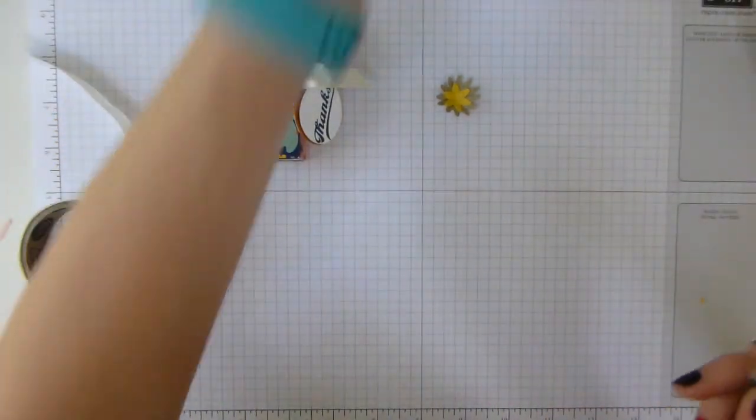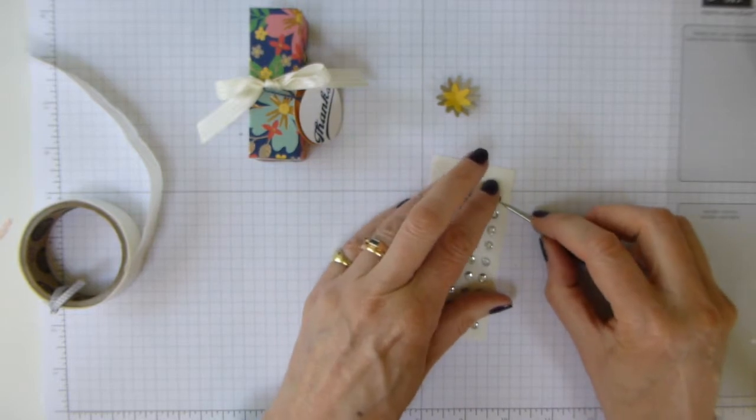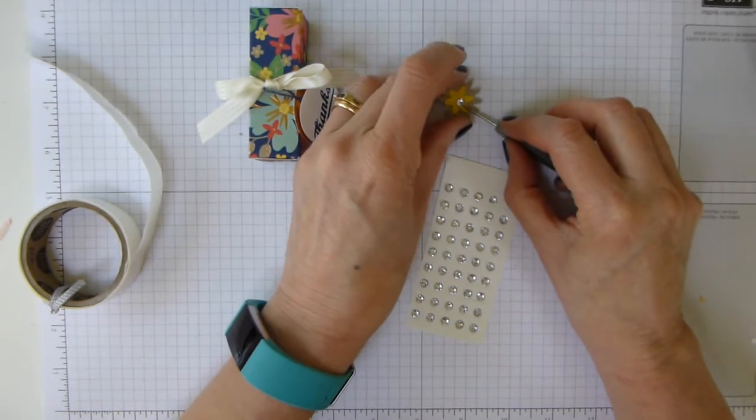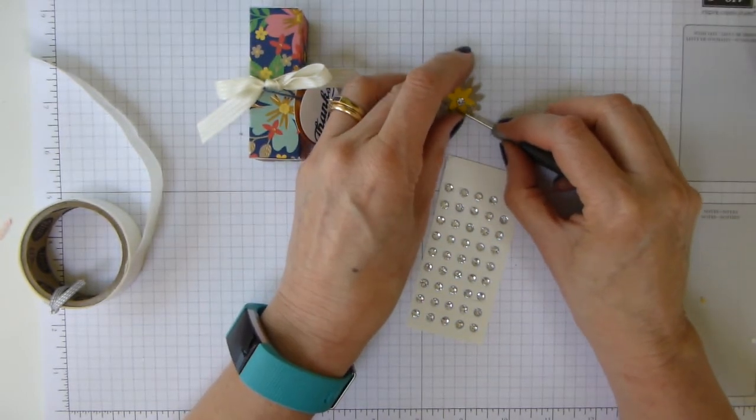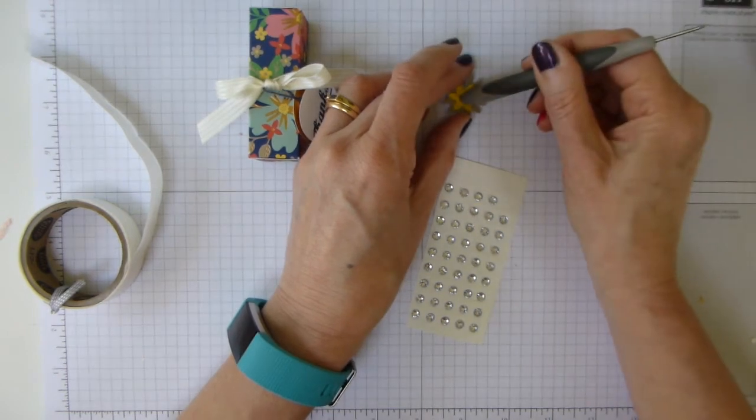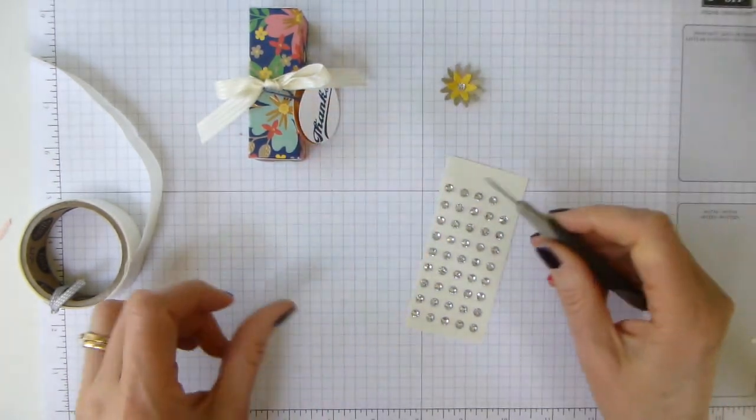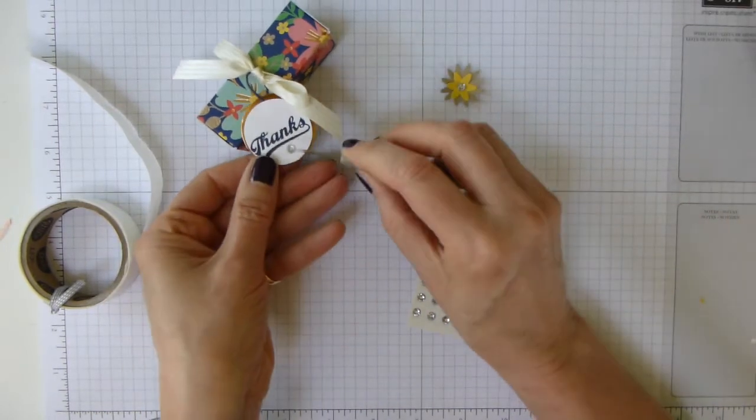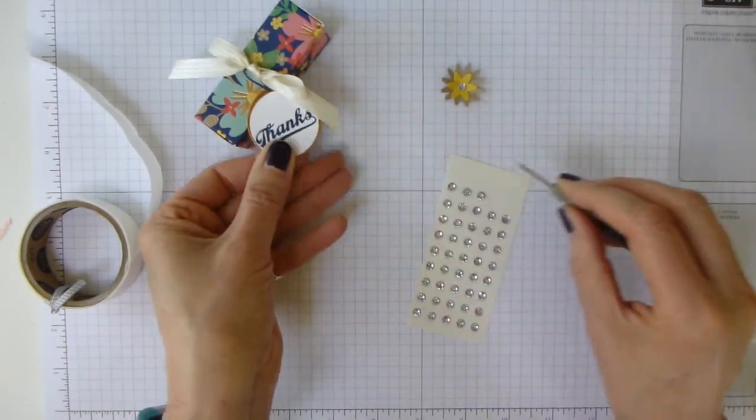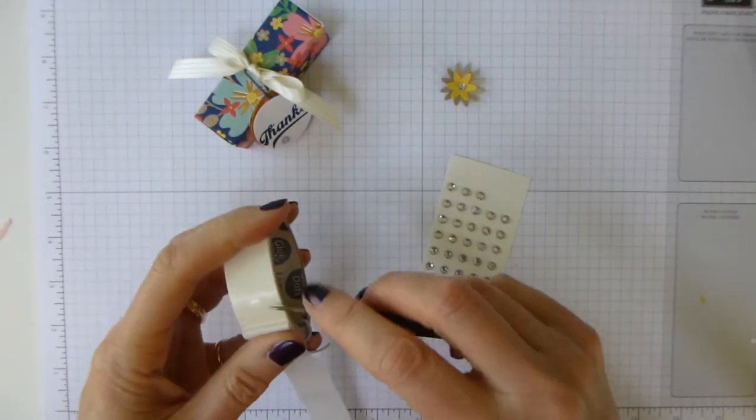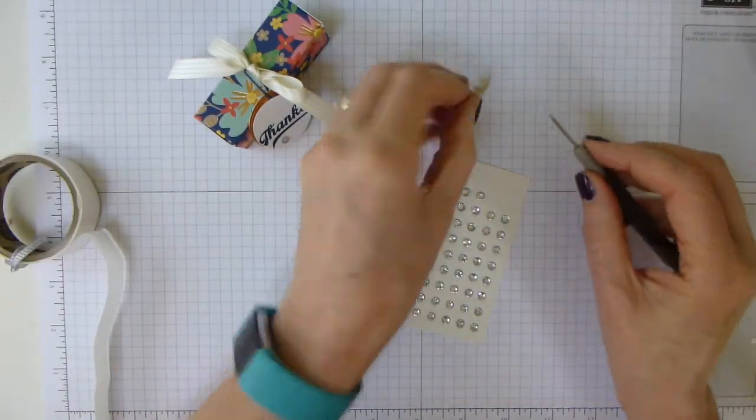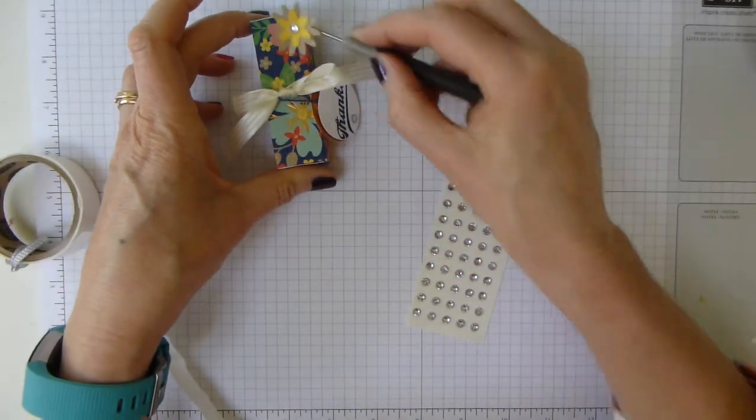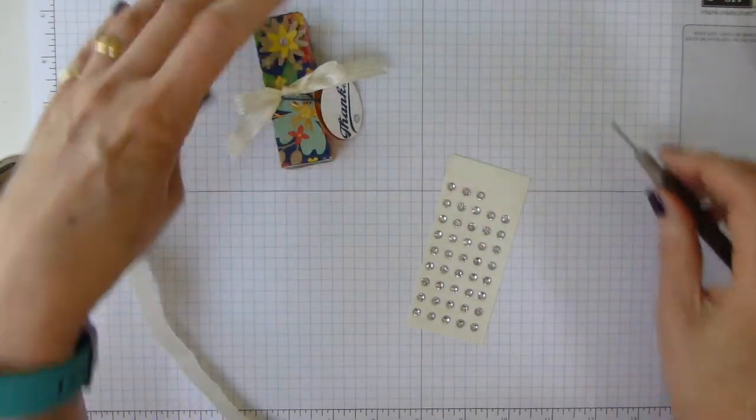And now I'm going to bring in my rhinestones. Now these are carrying over, but not in the same configuration, but they are going to carry over. So let's just make sure that's down, which it is. I'm also going to pop one on to my thanks, just to give it a bit of bling. Then, another sticky dot, and pop that, there I think, and there we are.